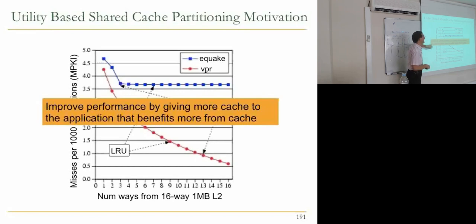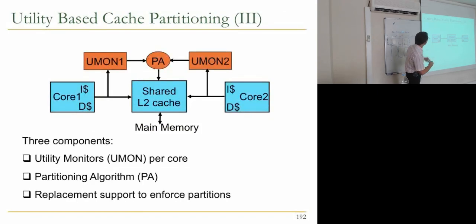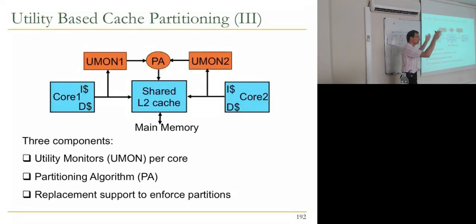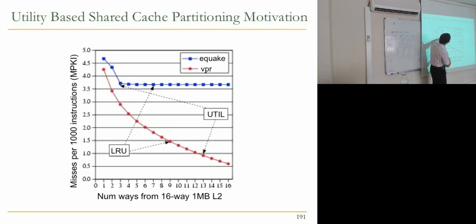To do utility-based cache partitioning, we need to monitor the utility of different cores from the cache — how much benefit each core gets. We need a partitioning algorithm that considers utility curves, and replacement support to enforce these partitions. For each core, we construct a utility curve, and the partitioning algorithm determines the best allocation — for example, this much cache to eQuake and this much to VPR.